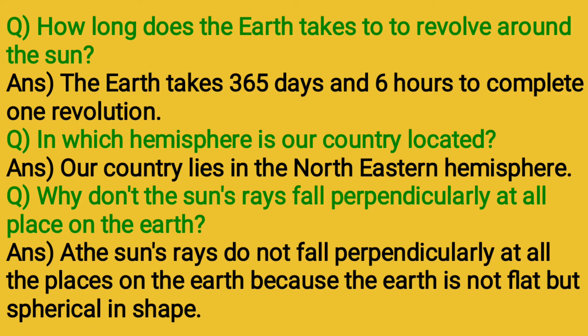Question: How long does the Earth take to revolve around the sun? Answer: The Earth takes 365 days and 6 hours to complete one revolution.